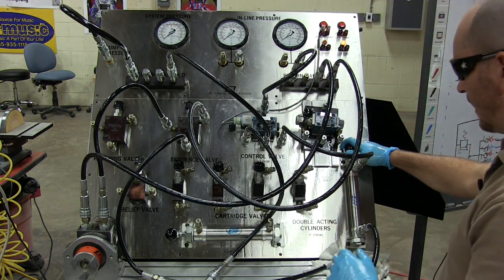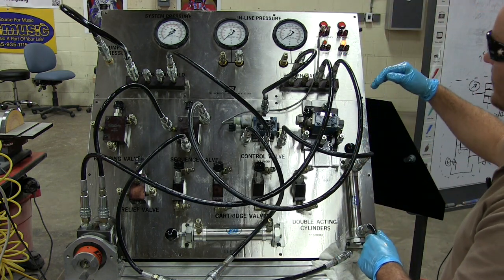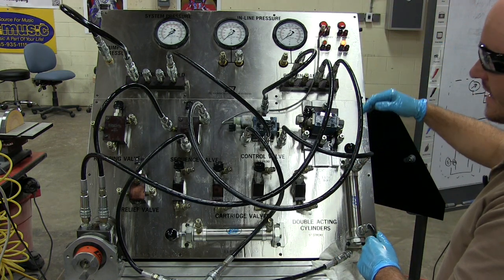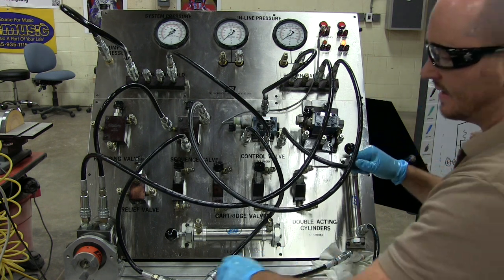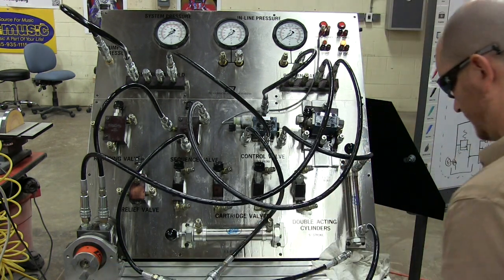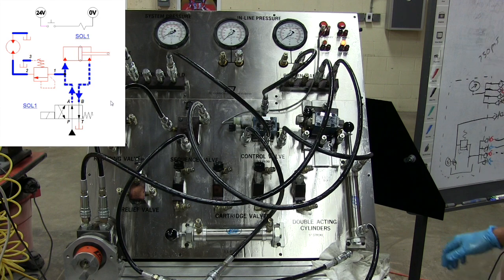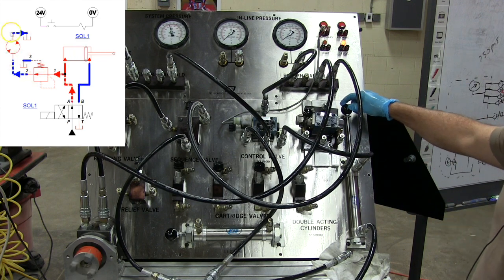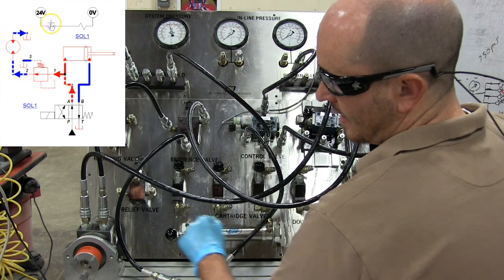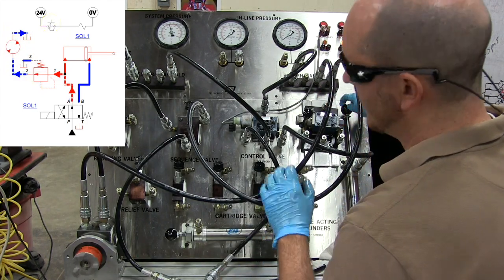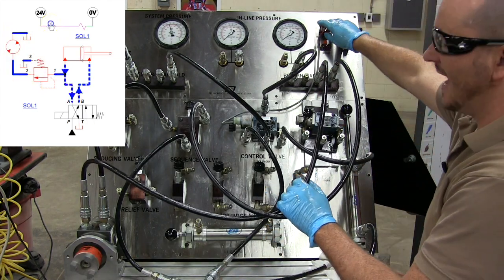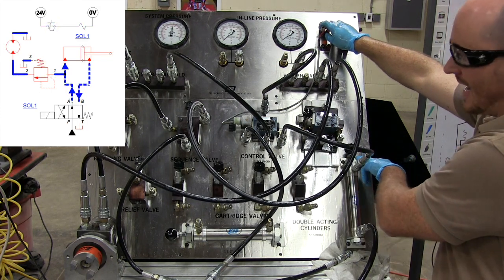So what should happen here when we turn it on—the cylinder should extend. When it's fully extended, this is going to start to spin. Let's see what happens. So it's extending out. As soon as it gets all the way, the motor starts spinning. The hydraulic motor starts spinning. If I activate this, it retracts the cylinder.